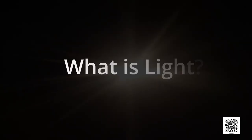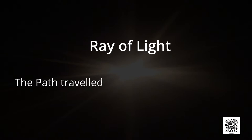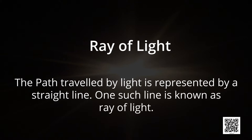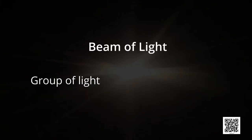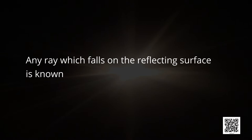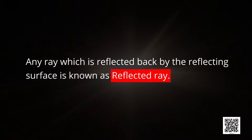Before this, it is necessary to learn some important terms. What is light? Light is a form of energy which produces the sensation of sight in us. The path travelled by light is represented by a straight line — one such line is known as a ray of light. A group of light rays travelling together is called a beam of light. Any ray which falls on the reflecting surface is known as an incident ray, and any ray which is reflected back by the reflecting surface is known as a reflected ray.